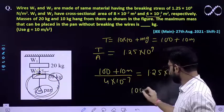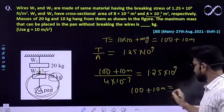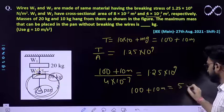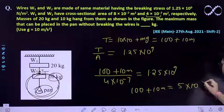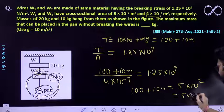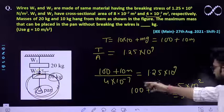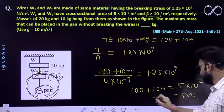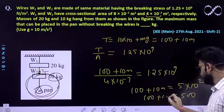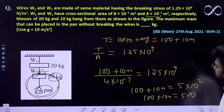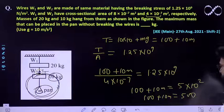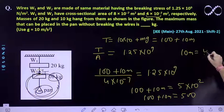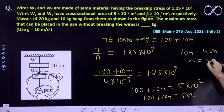So it would be 100 plus 10m. If I multiply, it would be 5 into 10 raise to power 2, so 500. This gives us 100 plus 10m equals 500. So 10m equals 400 and m comes out to be 40 kg.